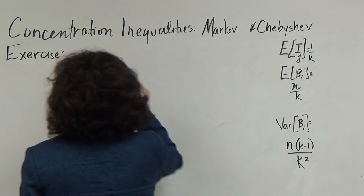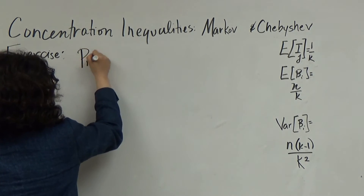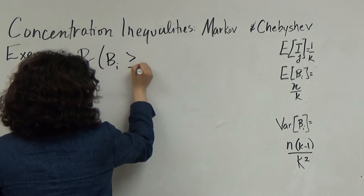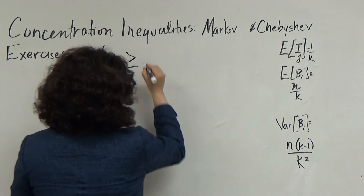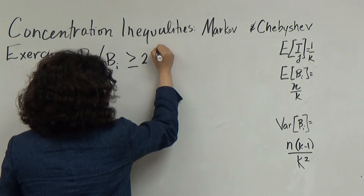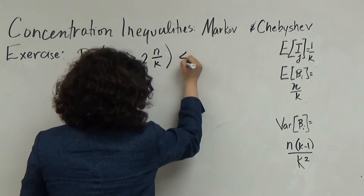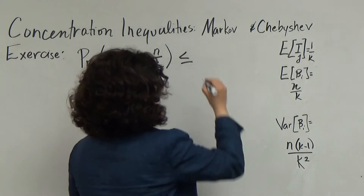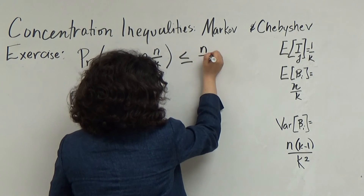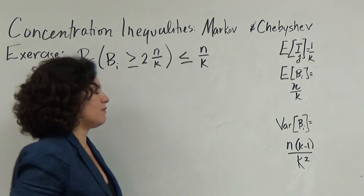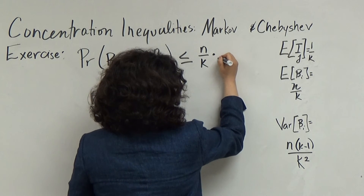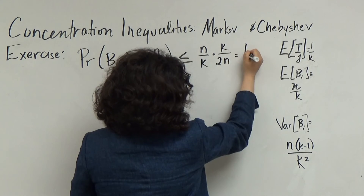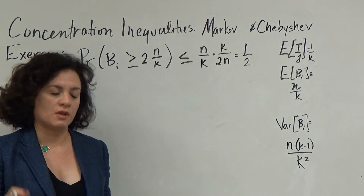We want P(bi ≥ 2n/k), since the expectation is n/k. Applying Markov's inequality, we divide the expectation n/k by the threshold 2n/k, giving us an upper bound of 1/2. So Markov's inequality tells us this probability is at most 1/2.